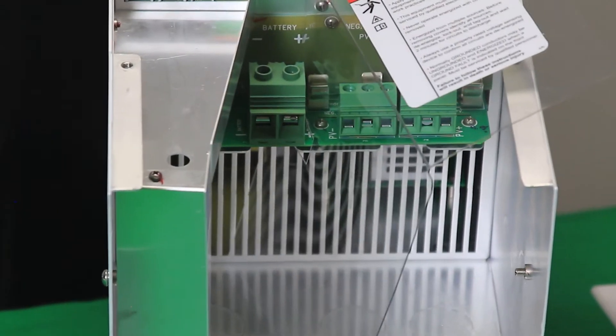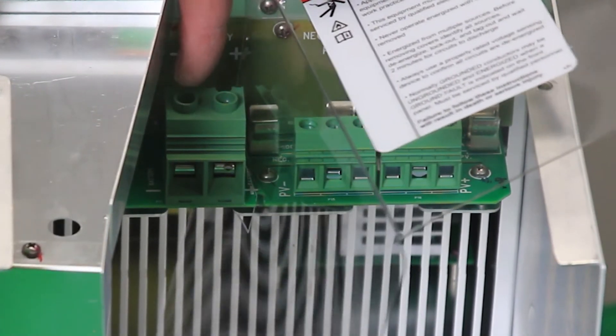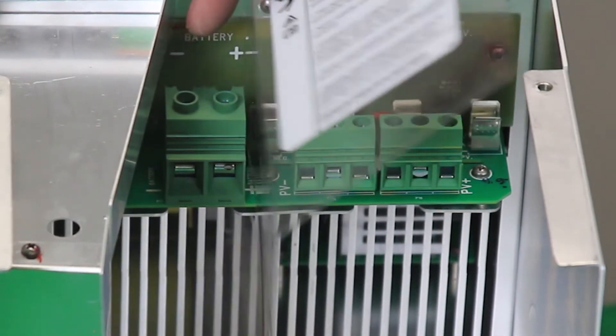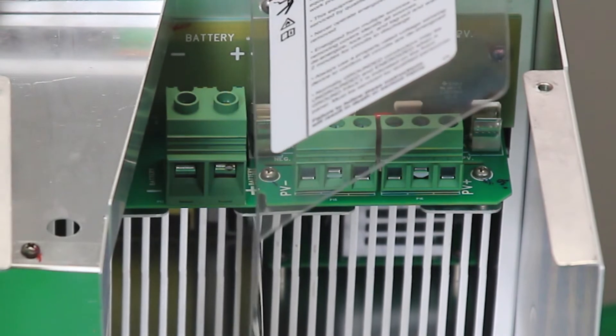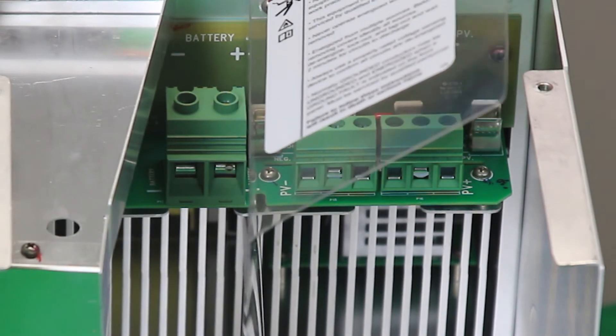So here we have the battery terminals, one positive and one negative. This particular terminal block will accept up to number 2 AWG or 35 square millimeters.